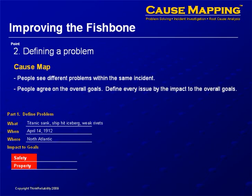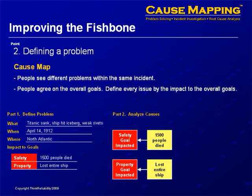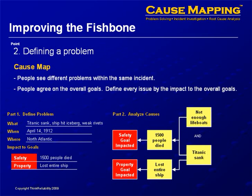The ideal state for safety is zero injuries. On the Titanic, there were 1,500 people that died, and in terms of damage to the ship, they lost the entire ship. The analysis step should begin with the impact to the goals: the safety goal was impacted because 1,500 people died, and the property goal was impacted because we lost the entire ship. You then ask why questions, and you can see visually how 1,500 people died because the Titanic sank and there weren't enough lifeboats. What people originally called the problem in the Titanic sinking is really just a cause of both goals being impacted — when you ask people what's the problem, they're really just giving you one of the causes.